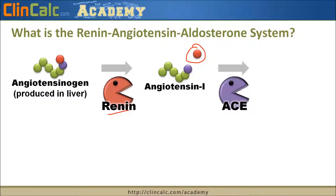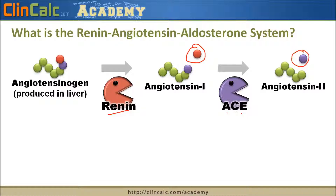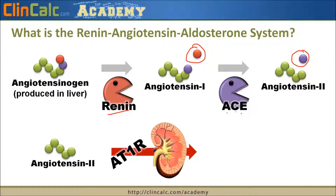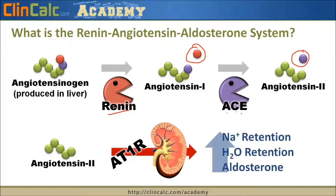From angiotensin I, another enzyme comes into play called the angiotensin-converting enzyme, which is a very original name. Again, we cleave off part of the hormone, and we end up with angiotensin II. Angiotensin II is really the workhorse of the RAS system. It goes to the kidney, triggers the angiotensin I receptor, and does three primary things: it causes sodium retention, and because sodium follows water, we get water retention, which increases blood pressure. It also triggers aldosterone, a hormone that produces more sodium and water retention.